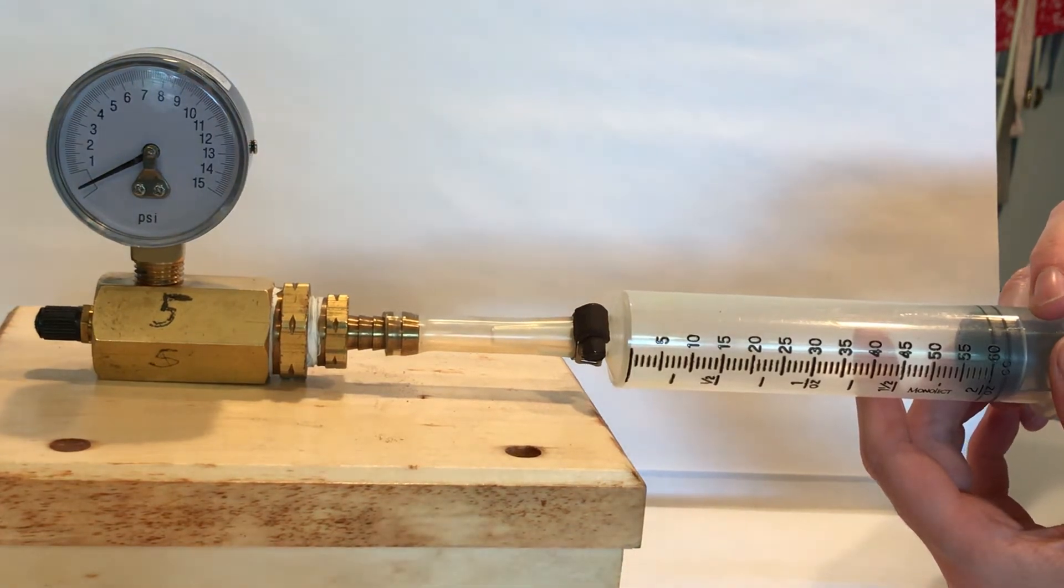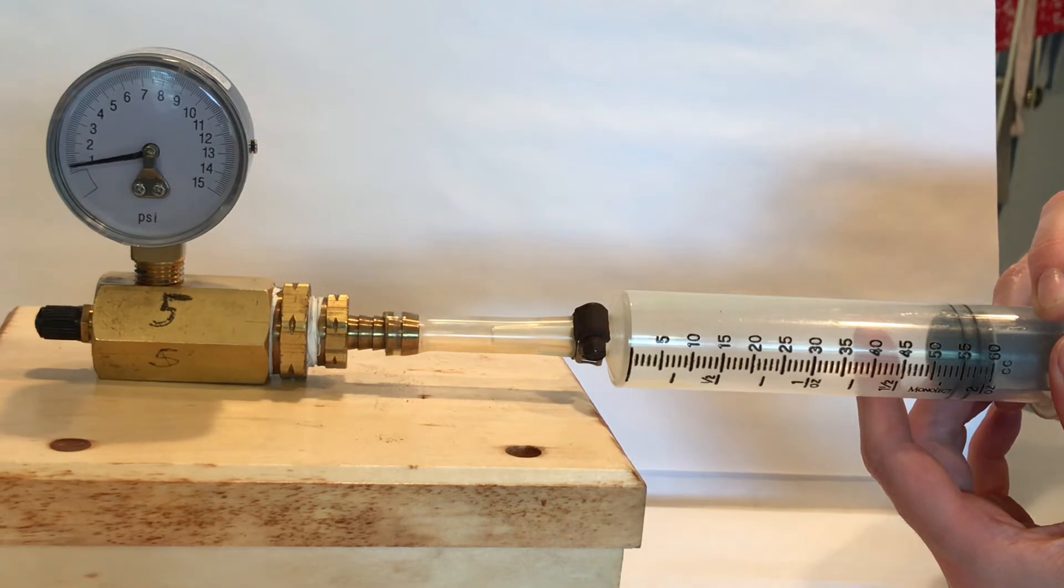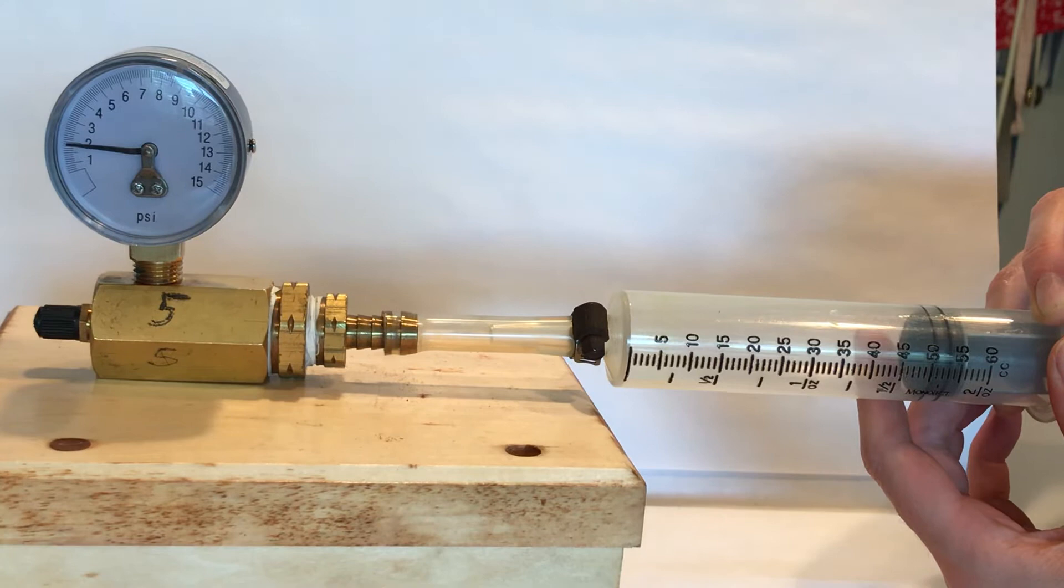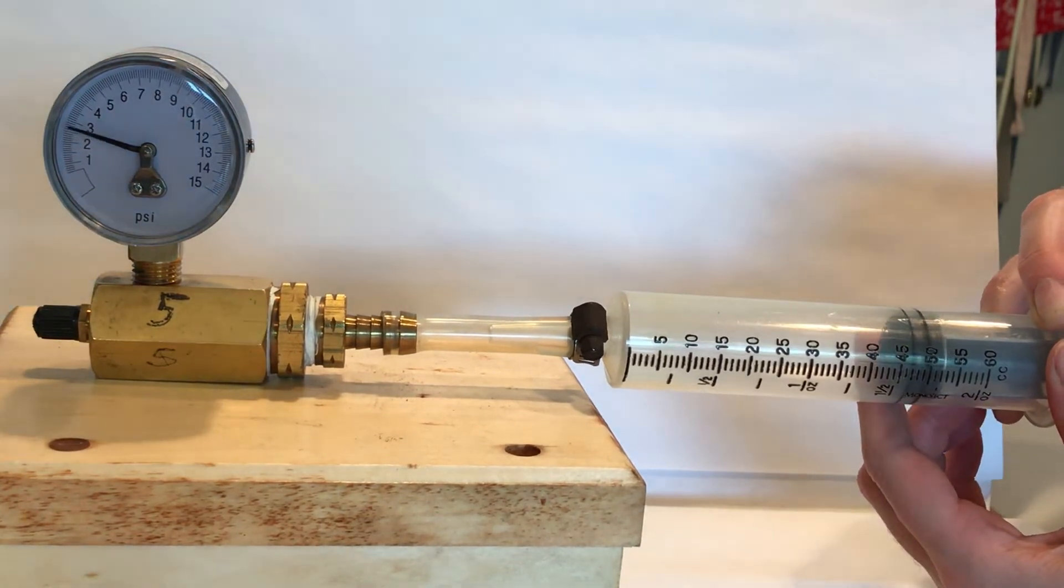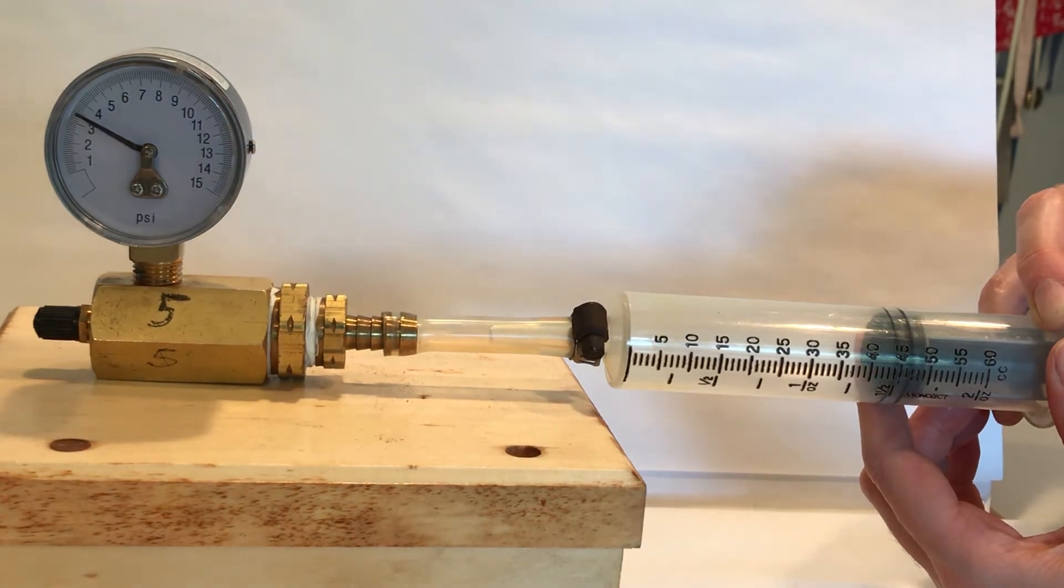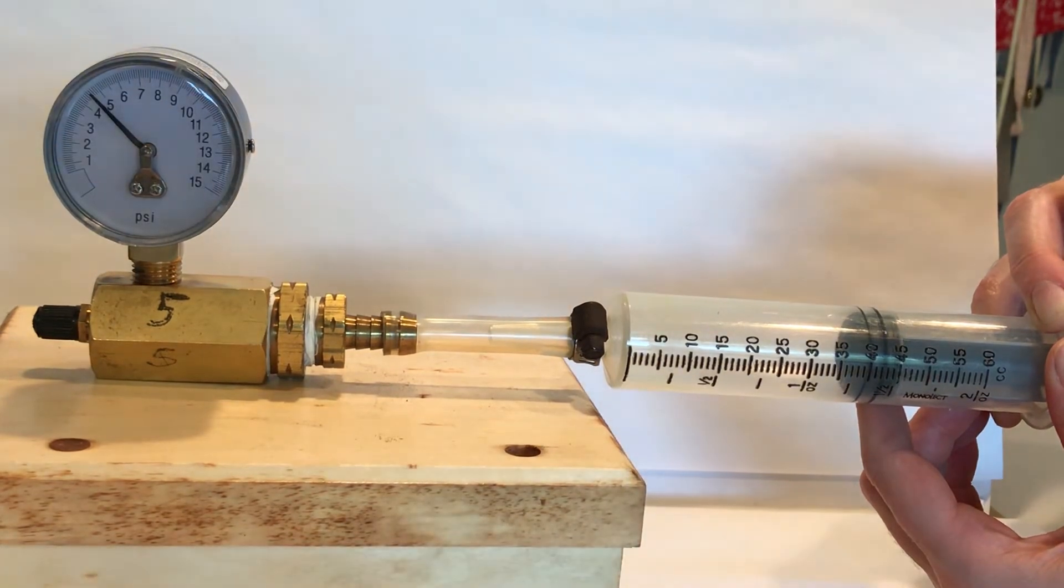So I've compressed the gas by 5 milliliters—it's at 55 milliliters. Now I've compressed the gas by 10 milliliters—it's at 50 milliliters. Now I've compressed the gas by 15 milliliters—the syringe is at 45 milliliters. Compressed by 20 milliliters—we're at 40 milliliters.